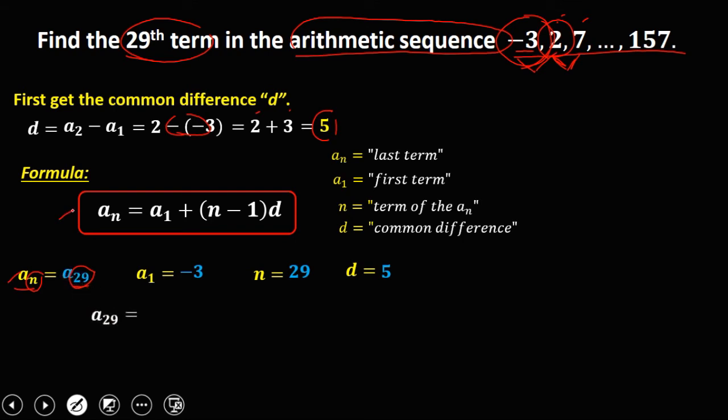So a sub n, that's 29. A sub 1, negative 3, plus n, that's 29, minus 1, times 5.